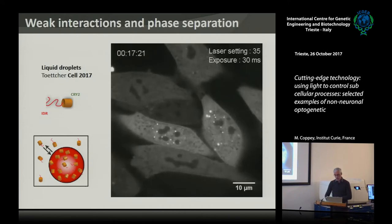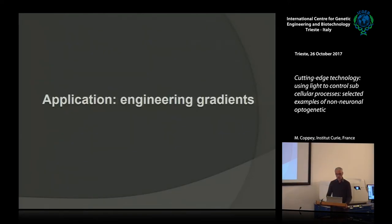In the few minutes remaining, I'll give you one application from our lab — to show what you can do with this optogenetic system. We use optogenetic activation of the small GTPases I was describing. One thing we are interested in is cell migration: how cells migrate and decide where to go — left, right, forward — in a complex environment.